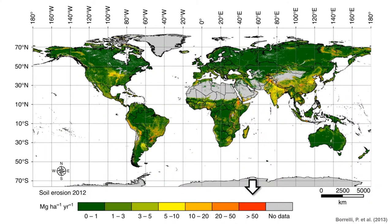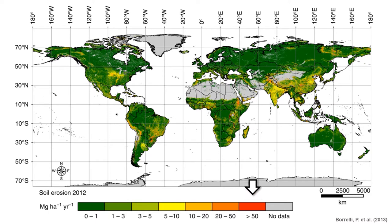At global scale, in the year 2012, around 7.5 million square kilometers of soil presented high levels of erosion, specially concentrated in less developed countries in South America, Africa, and Asia, and mainly driven by water.